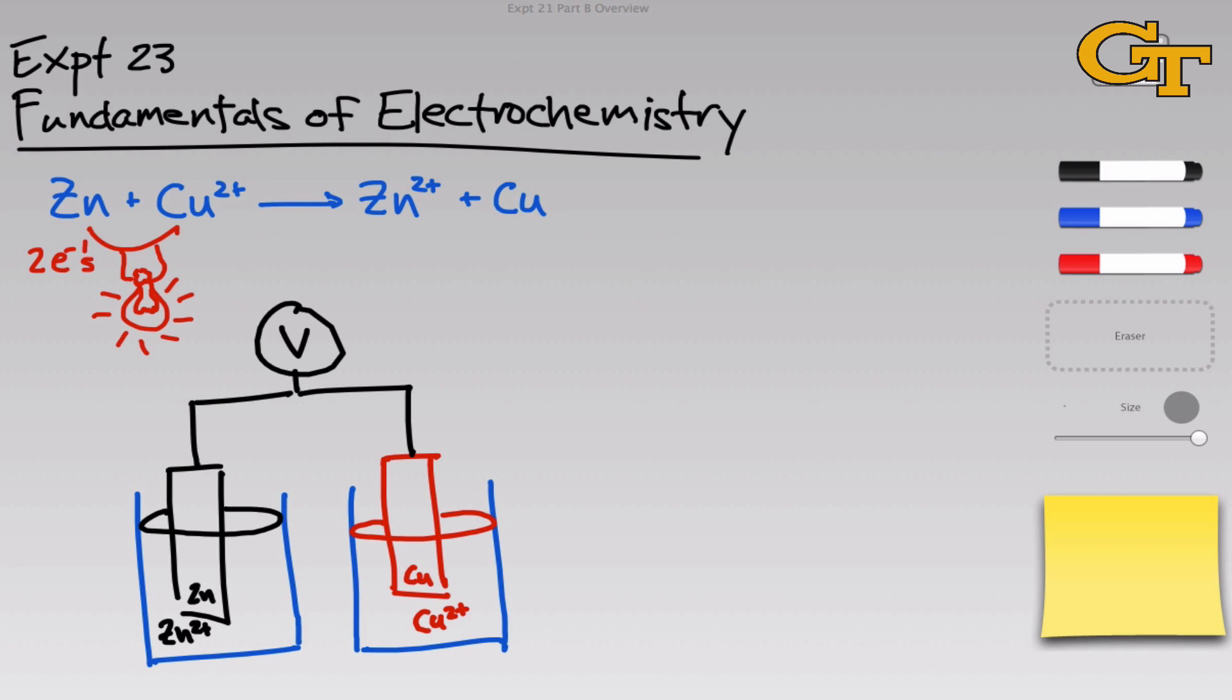Electrons are going to move from the zinc to the copper 2+. Just thinking about where those are located in the setup, electrons are going to move from the zinc electrode on the left, the metal strip of zinc on the left, toward the copper 2+ ions that are actually in solution on the right. So electrons will move from the left to the right spontaneously in this process. So it looks like we're accomplishing our goal. We're moving electrons along that wire macroscopically through space.